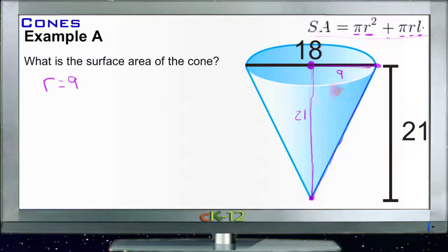We're just going to use Pythagorean theorem. To find our slant height, we have s squared equals 21 squared plus 9 squared. Well, 21 squared is 441 and 9 squared is 81.